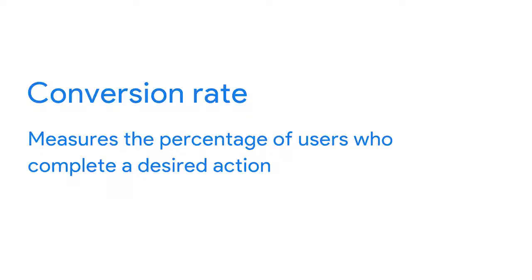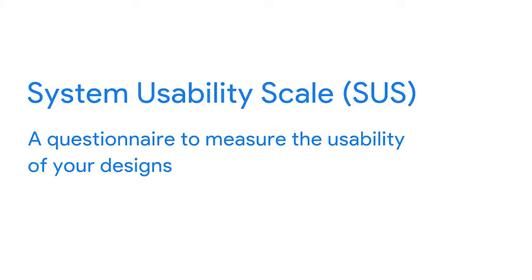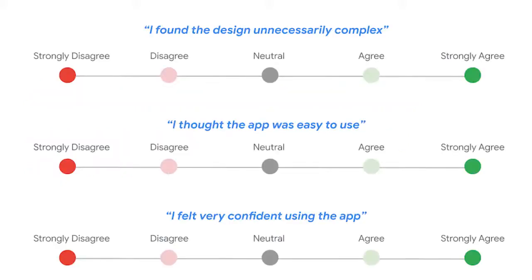On the other hand, a conversion rate is a number you want to see increase. It measures the percentage of users who complete a desired action — for example, the percentage of users who actually made a purchase. Finally, if you want to answer the question 'how easy is my app to use?' and need quantifiable answers, a system usability scale can help. A system usability scale, or SUS, is a questionnaire to measure the usability of your designs. Users are asked to agree or disagree with 10 statements about usability, such as 'I found the design unnecessarily complex,' 'I thought the app was easy to use,' and 'I felt very confident about using the app,' on a strongly disagree to strongly agree scale. It's a quick and reliable way to know if a design is working.